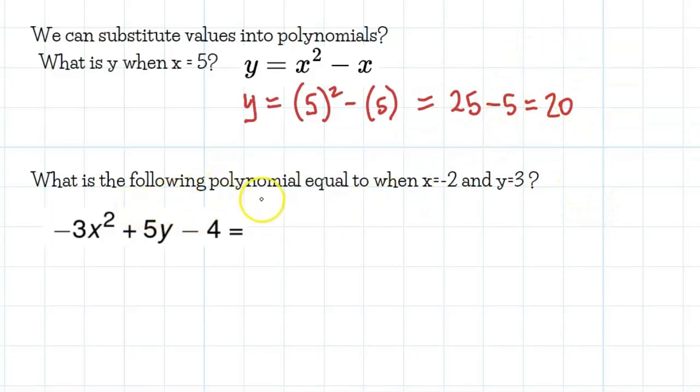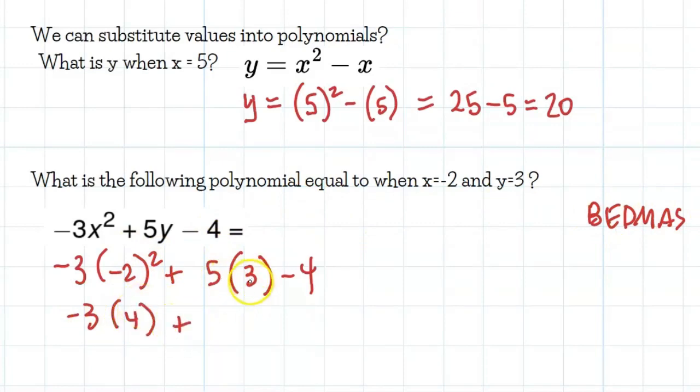Here's another example. What's the following polynomial equal to when x is negative 2 and y is 3? So again, I'm just going to rewrite this and crunch the numbers. Negative 3 times negative 2 squared plus 5 times 3 minus 4. Negative 2 squared, we're going to do the exponents first because of BEDMAS, of course. I'm just going to write that here. Negative 2 squared is going to be 4. 5 times 3 is 15 minus 4. This is negative 12 plus 15, so we're at plus 3 minus 4 is minus 1.